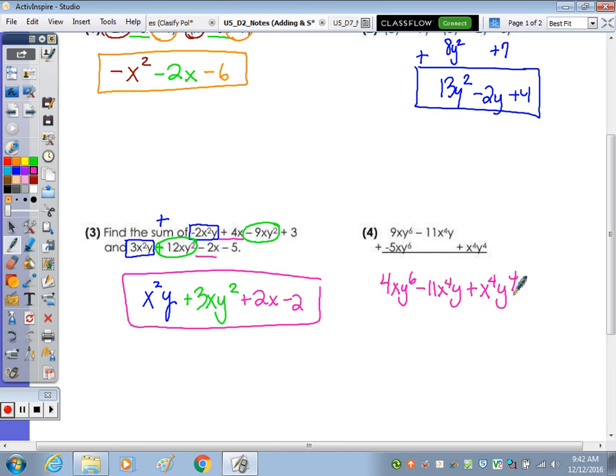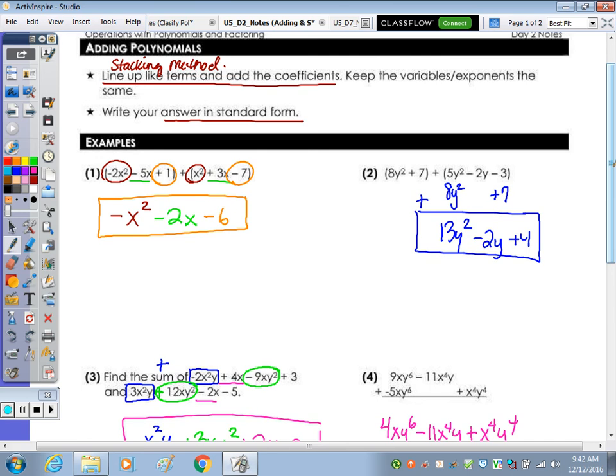As far as naming goes, just to bring the two notes together and review, number 1, because it has three terms, would be a quadratic trinomial. Again, the tri is for 3. And same with 2. They're both quadratic trinomials.